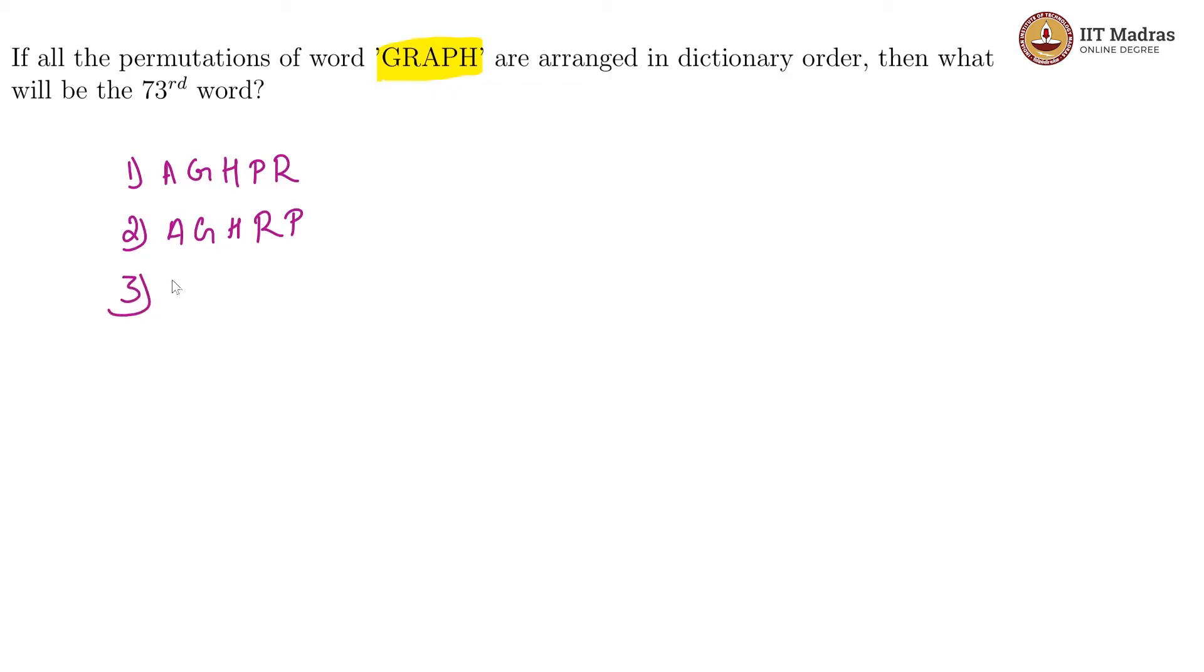And then the third one in this order would be A is still there, G is still there, but in the place of H we put P and then HR. And so on and so forth, you will get so and so number of permutations. How many permutations do we get on a 5 letter word?